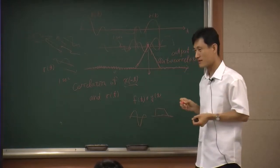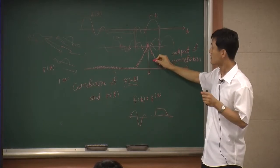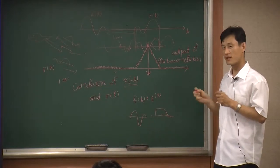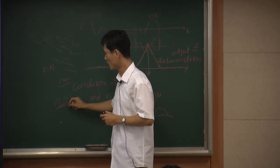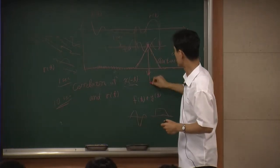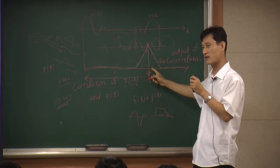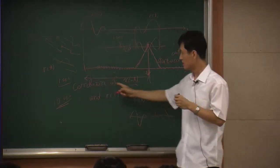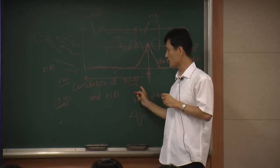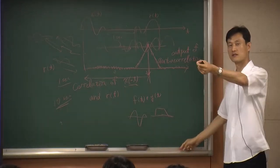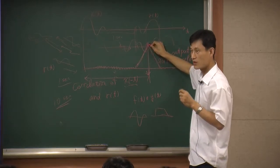The time at which you see the peak tells you when you found the match. If it takes 10 seconds to find the peak, that 10 seconds is from the moment you started to the moment you detected the match. Based on this time delay you can calculate the distance to the object.